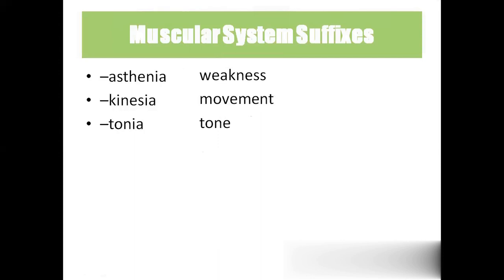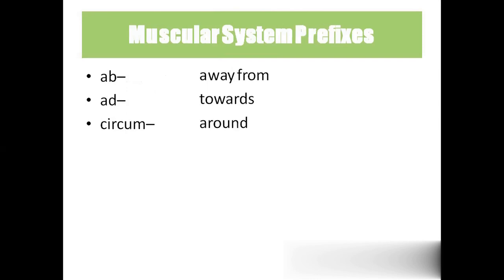Asthenia means weakness, so myasthenia means muscle weakness. Kinesia means movement. Tonia is tone — for example, myotonia means muscle tone. Ab means away from, so abduction means away from the body. Adduction means towards the body — ad means towards. Circum means round. Abduction means taking the hand away from the body. Adduction means bringing the hand towards the body. Circumduction means making a circle.